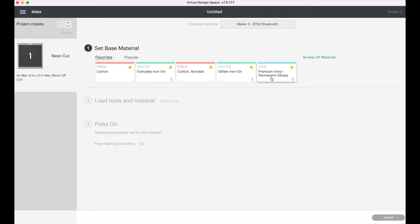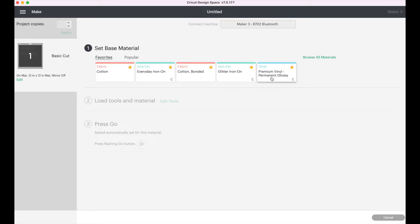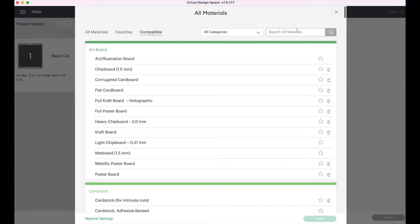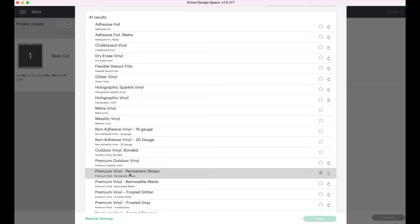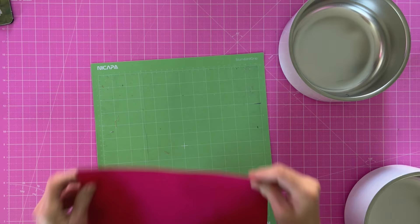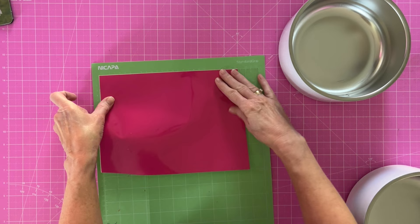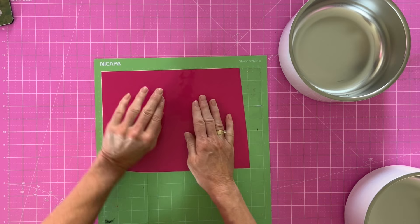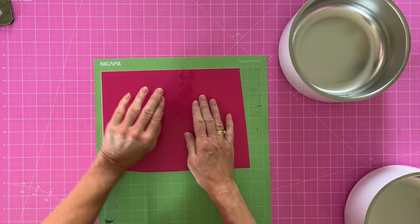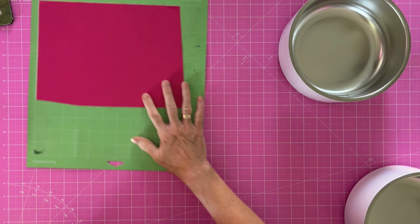I'm going to choose the premium vinyl permanent glossy. If you don't see that, you can just click here, browse all materials and you can search in vinyl. And again, I'm using the 651. So that's equivalent to this one, the premium vinyl permanent glossy. So all we're going to do is take our Oracle 651. I've cut it down to size. We're going to put this on paper side down, pretty side up. You do not mirror this in design space like HTV. Make sure that it's stuck. I'm using the green mat. This is the Nikaba mat. I like these a lot. I will link them in the description below.